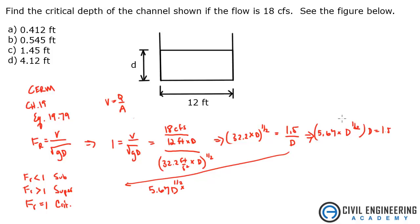I just multiplied these two together. Times that by D equals 1.5. So you've got to remember your algebra here. So D to the one half times D, you add those. So that's going to be D to the three halves. So it's going to be 5.67 D to the three halves or D to the 1.5.